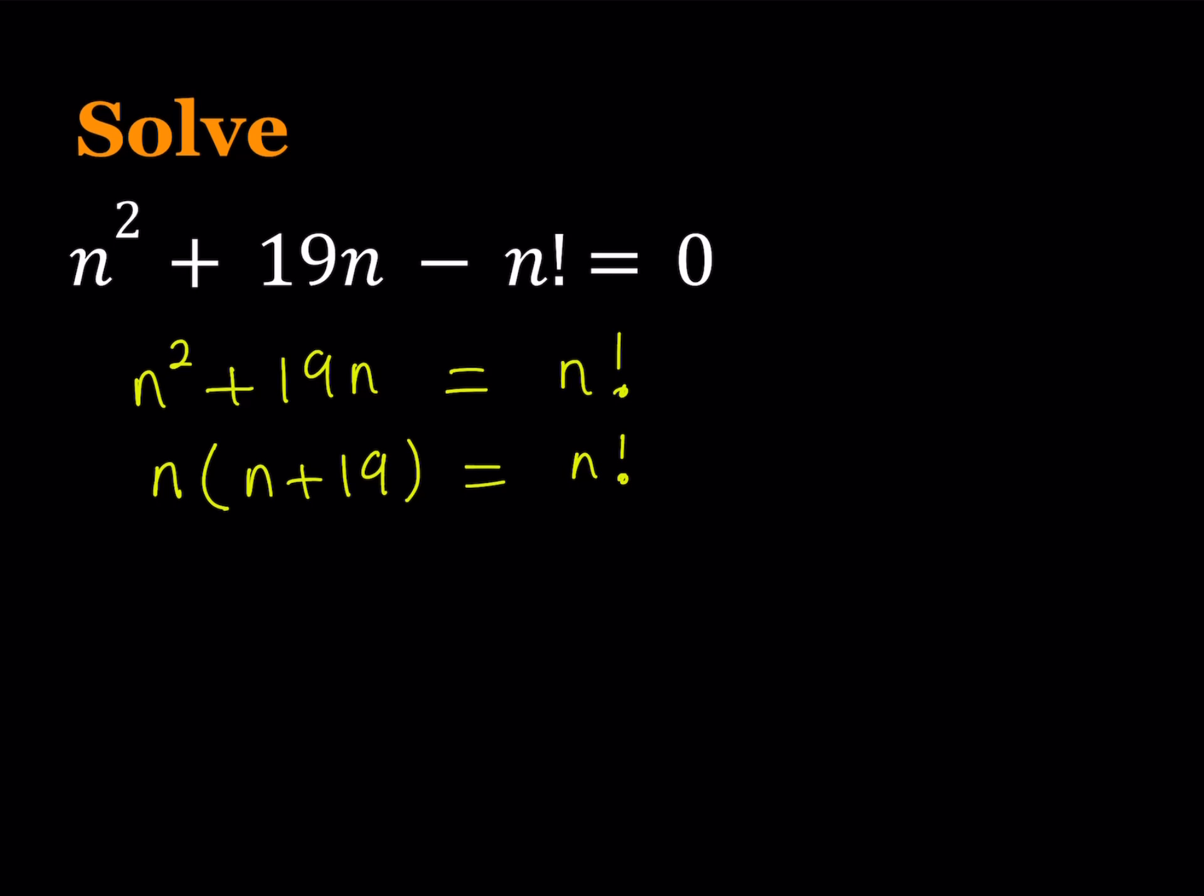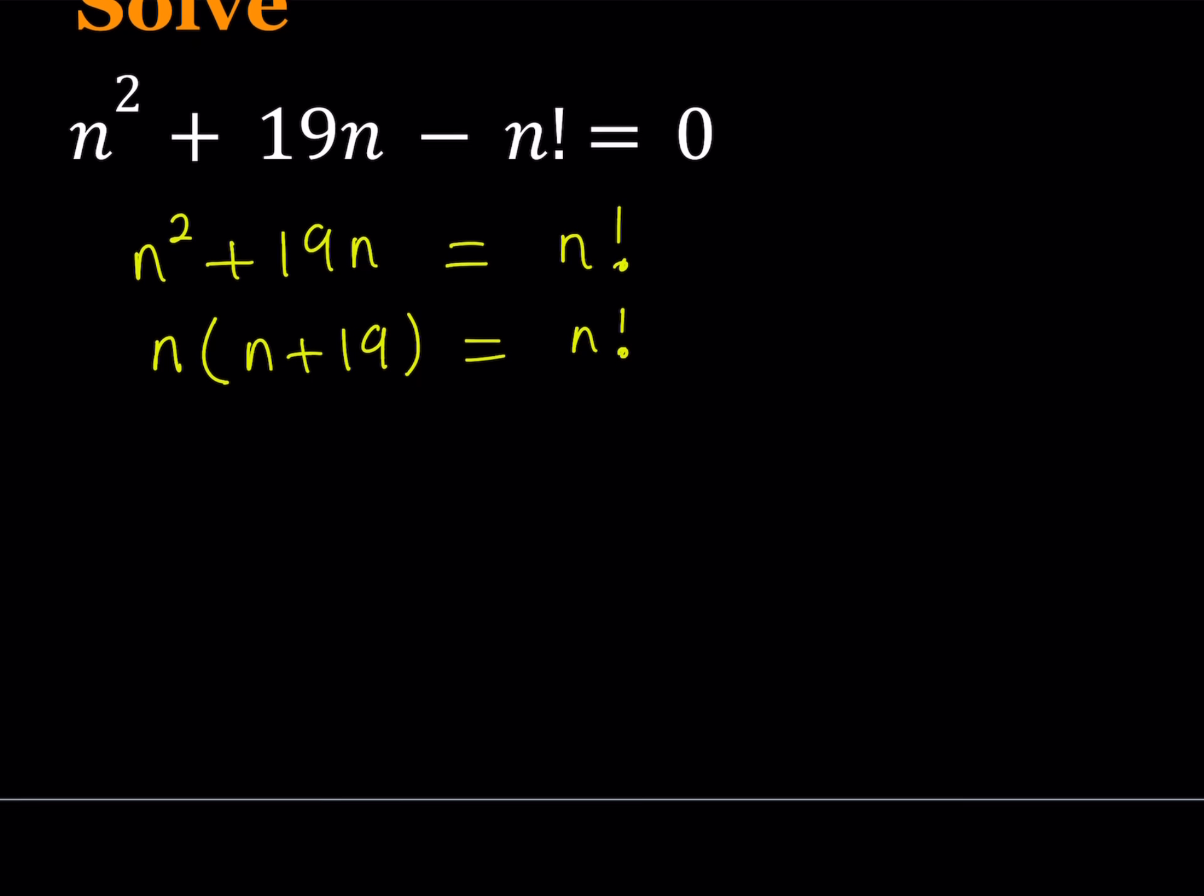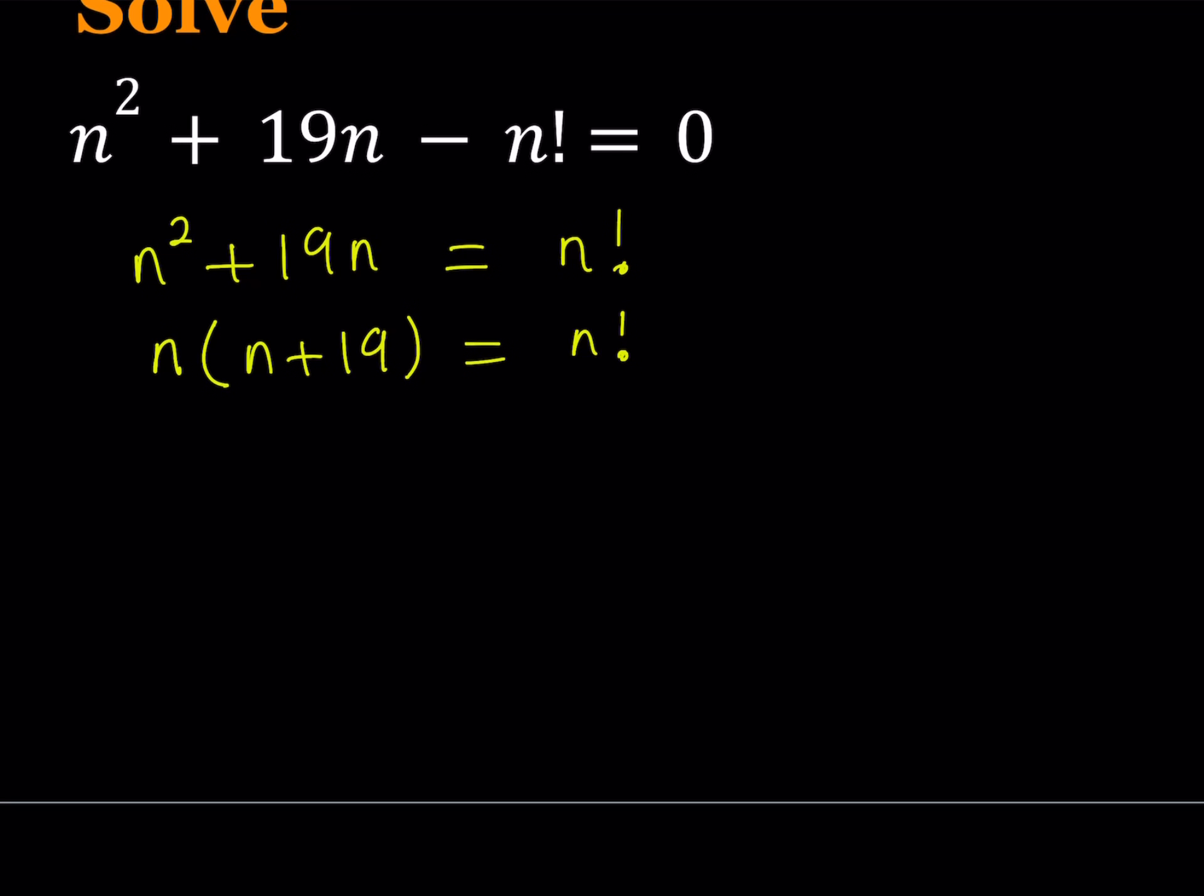Notice that n factorial is divisible by n and the left-hand side is also divisible by n, so we can divide both sides by n. But one thing to notice: n cannot equal 0. Because if you substitute 0 in the original problem, since 0 factorial equals 1, 0 is not going to be a solution.